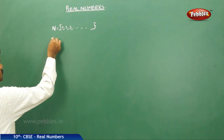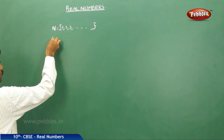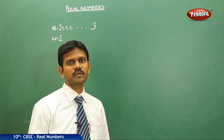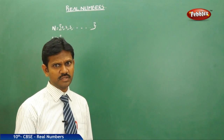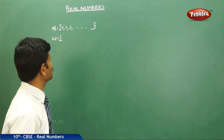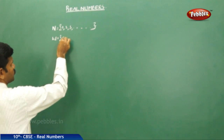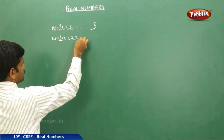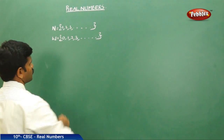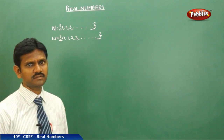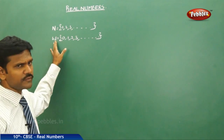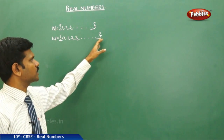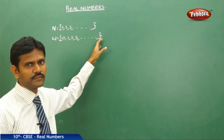Next, the set of whole numbers. How do we define a whole number? Whole numbers are formed when you include 0 with the natural numbers. The set of numbers formed is called the set of whole numbers. In the set of whole numbers, the least number is 0 and the highest number is not defined.